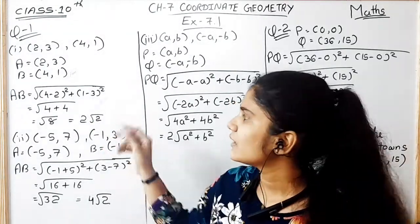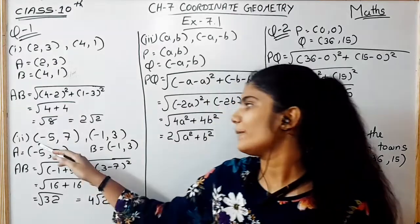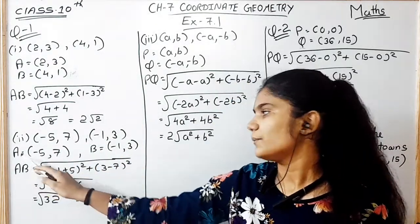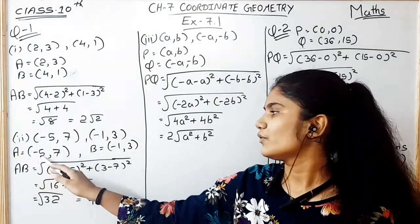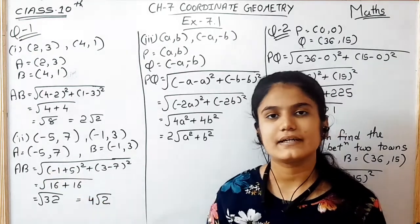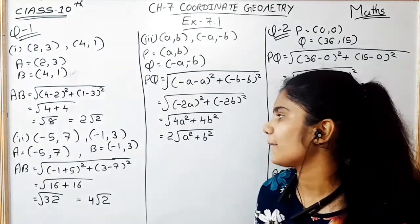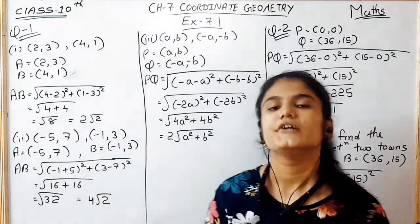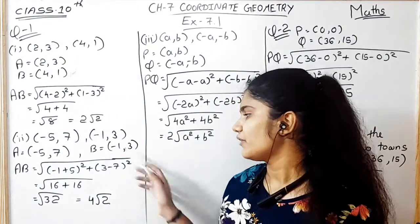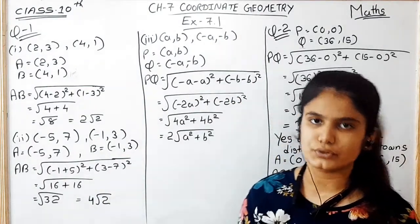Similarly, for sub-part 2, the points are A(−5, 7) and B(−1, 3). Using the distance formula, we get the answer 4√2.